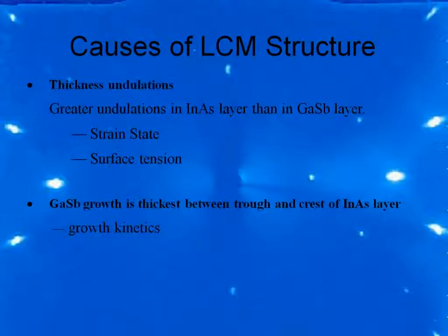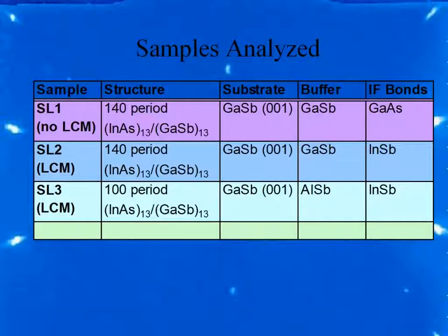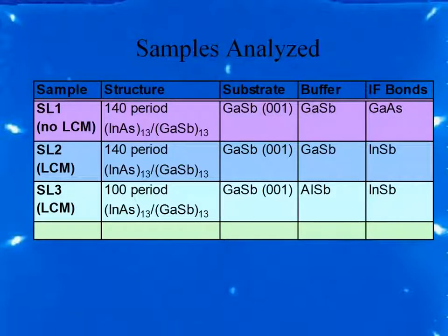So what causes this LCM? The thickness undulations are greater in the indium arsenide layers than in the gallium antimonide layers — a lot of this is attributed to the strain state and surface tension. Additionally, the gallium antimonide growing thickest between the trough and the crest of the indium arsenide layer is likely associated with growth kinetics. We will present data for three different samples: one with no lateral composition modulation, grown with gallium antimonide bonds; and two samples with LCM — a 140-period sample on gallium antimonide substrate/buffer, and one with gallium antimonide substrate and aluminum antimonide buffer, both with indium antimonide interfaces.